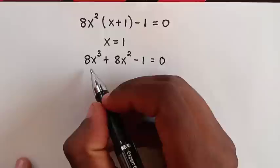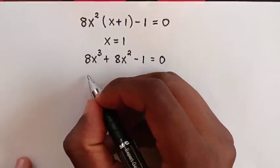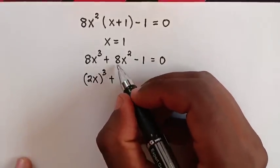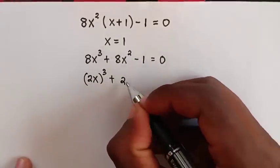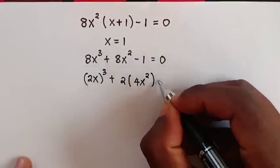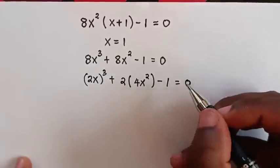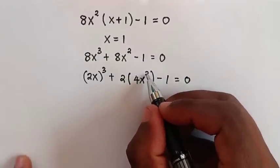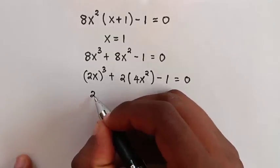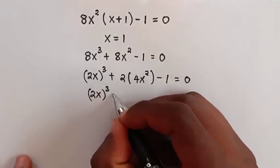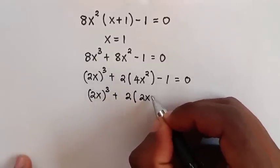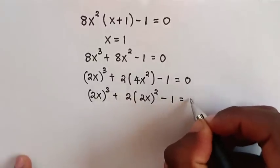Then 8x cubed is the same as (2x) cubed, and 8x squared divided by 2 will be 4x squared, minus 1 is equal to 0. Then this 4x squared is the same as (2x) squared. So here it will be (2x) cubed plus (2x) squared minus 1 is equal to 0.